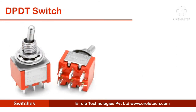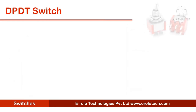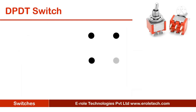Like the SPDT switch, there is another type called the double pole double throw, or DPDT switch. This is the symbol of a DPDT switch. These switches have six pins. To understand its working, we can name both its middle pins C1 and C2, both the top pins A1 and A2, and both the bottom pins B1 and B2.